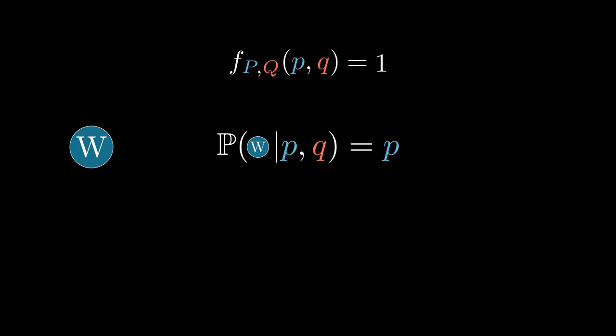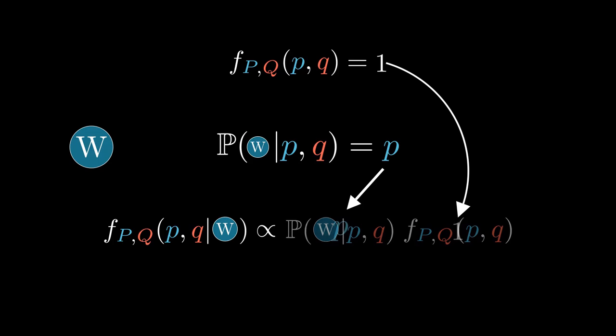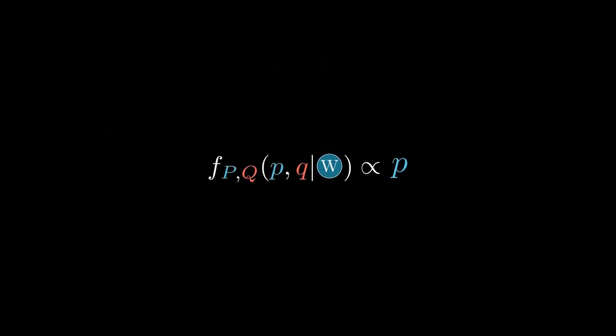It states, f(P,Q|A won the first game) equals f(A wins the first game|P,Q) times f(P,Q) divided by probability of A winning the first game. The term in the denominator is the unconditional probability of A winning a game. We can find it with the law of total probability, but for the purposes of our discussion, we only have to know that it is a constant independent of P and Q. We will ignore it for now and turn the equality sign to a proportional sign. The first term in the numerator is just P and the second term is 1. Our updated density function then becomes f(P,Q|A wins the first game) is proportional to P.